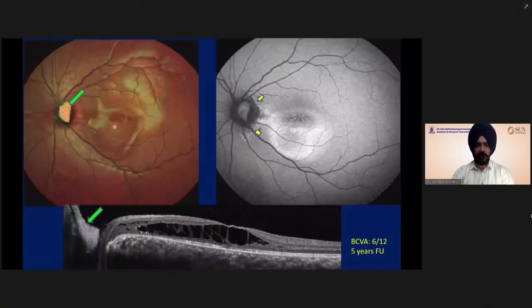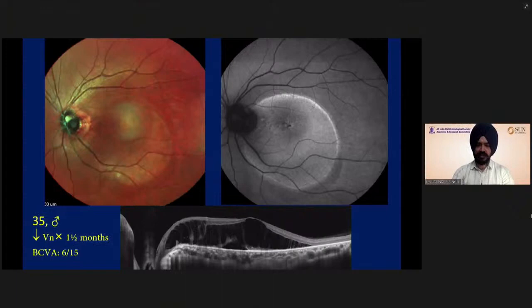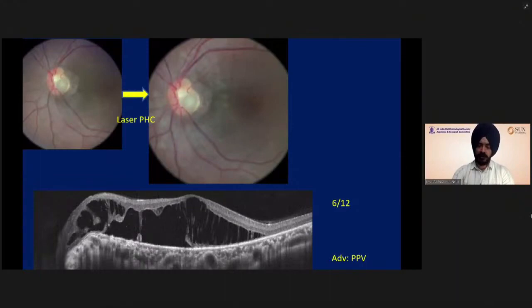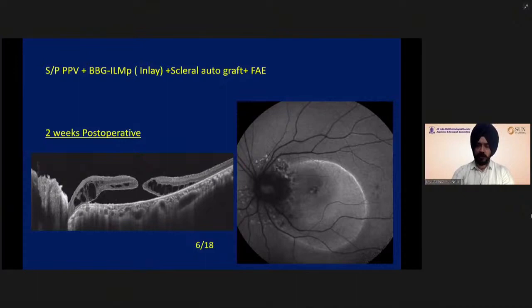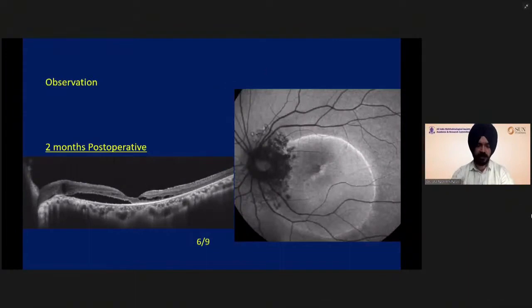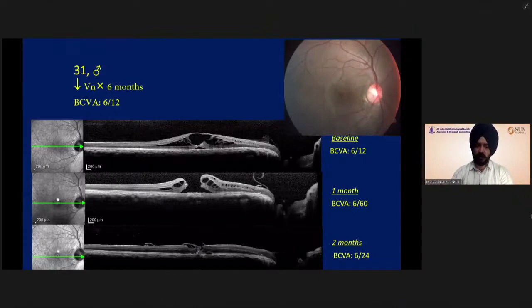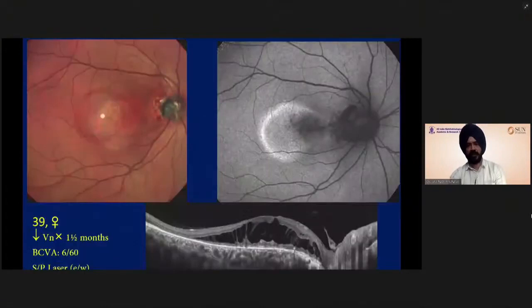Subsequent to the scleral graft, the patient had good resolution with five years of follow-up, maintaining 6/12 vision, though there are some cystic changes at the macula. Another young patient with vision 6/15 had laser photocoagulation done for the pit with no improvement, then had a graft and developed a macular hole. Subsequently, just by observation, the full-thickness defect actually closed. Sometimes the patient may not be so lucky and may need to go in again to close the macular hole by an inverted ILM flap. After surgery, the patient may develop a lamellar hole, but that usually does not affect the outcome.